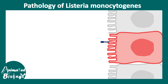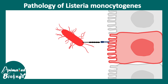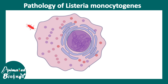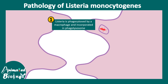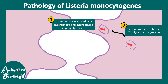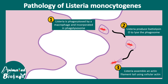Listeria can adhere to the host cell with the help of specific molecules known as internalin, which binds to cadherin molecules on the host cell. Once engulfed by a monocyte or macrophage, inside those cells they form a phagosome. However, Listeria produces a specific protein known as listeriolysin O, which can lyse the phagosome, so it is then freely swimming in the cytoplasm of that phagocyte.